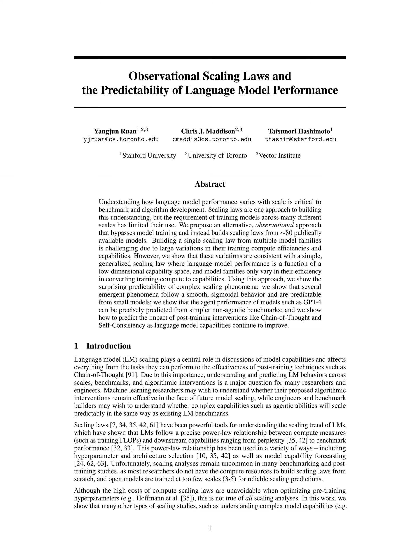The paper aims to overcome the limitations of traditional compute scaling laws by proposing a low-cost, higher-resolution alternative that leverages existing open models to build scaling laws based on observable benchmark performance and capability measures. By identifying a low-dimensional space of LM capabilities and demonstrating log-linear relationships between these capabilities and training compute measures, the paper provides a method for predicting complex LM capabilities, such as emergent and agentic behaviors, as well as the effectiveness of post-training techniques like chain of thought.